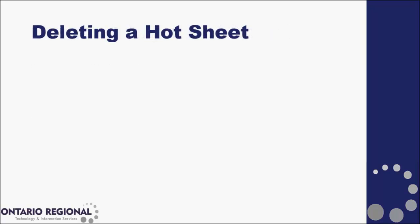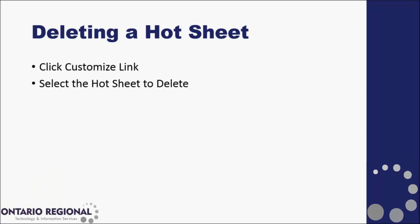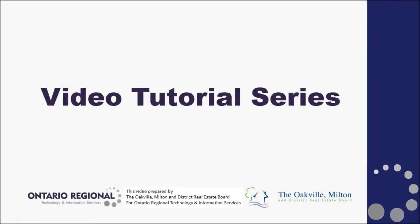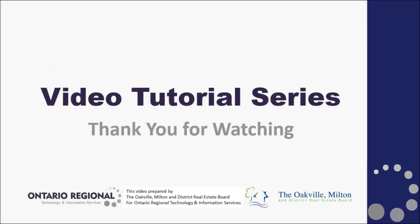We then learned how to delete a hot sheet from our Hot Sheets widget. We click the Customize link on the Hot Sheets widget, select the hot sheet that we wish to delete, and then click the Delete button. Confirm the deletion to finalize the delete of that hot sheet. If we need to reset our hot sheets back to the system defaults, we click the Reset to System Defaults link and confirm the reset. Thank you for watching this video. If you have any questions about hot sheets or any other features in Matrix, please contact your friendly local board staff.